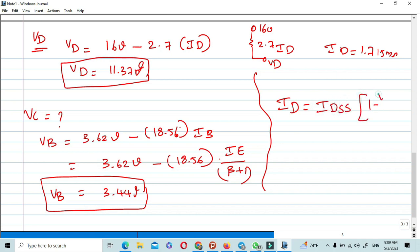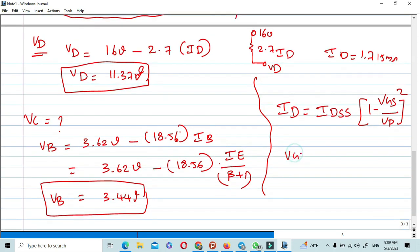You can take it as homework: ID equals IDSS times 1 minus VGS over VP squared. Automatically, you substitute all the values, you may get VGS equals minus 3.73 voltage.